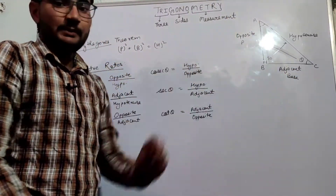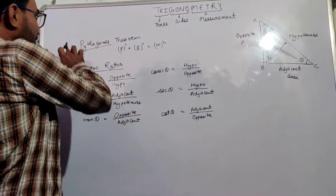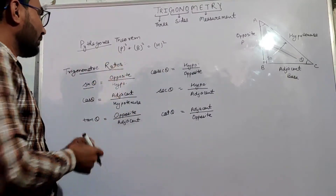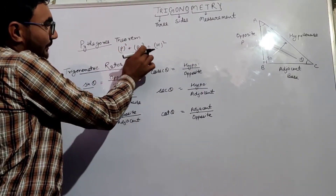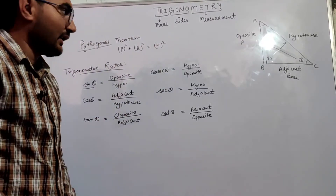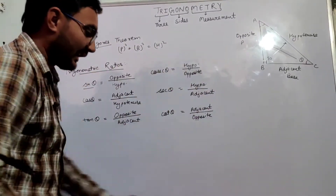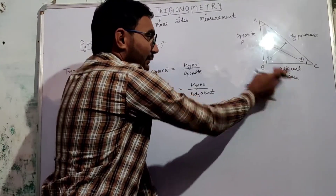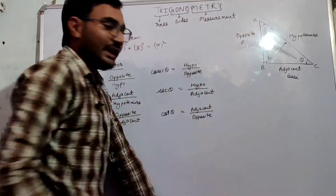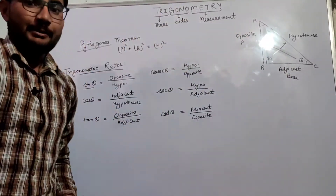So this will be perpendicular and this will be base. Now we know that the Pythagoras theorem can be used in a right angle triangle. Pythagoras theorem states: perpendicular squared plus base squared is equal to hypotenuse squared, where perpendicular and base will vary according to our theta. If this is our theta, then it will be our base, and if we take the other angle as theta, then it will be our base and the opposite side will be our perpendicular.